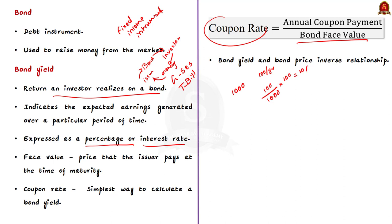Consider a 10-year bond with a price of rupees 5000 and a coupon rate of rupees 200, so the yield is 4 percent. Suppose the price of the bond increases from 5000 to 5500 due to strong investor demand, trading at 10 percent above the issue price. However, the coupon amount remains the same at rupees 200, and now the bond yield changes to 3.64 percent.